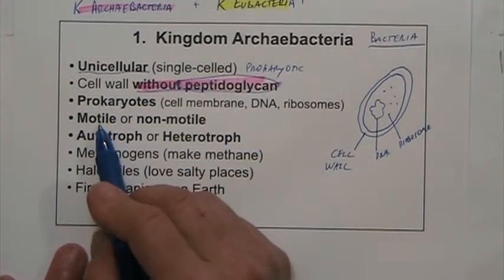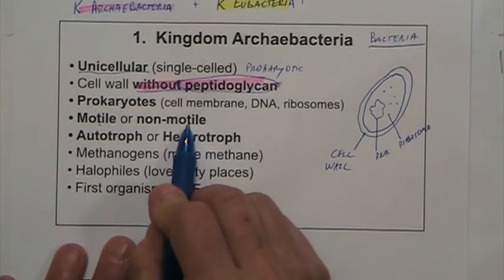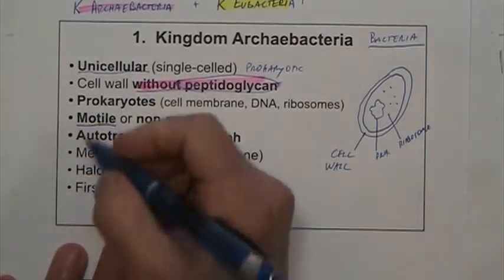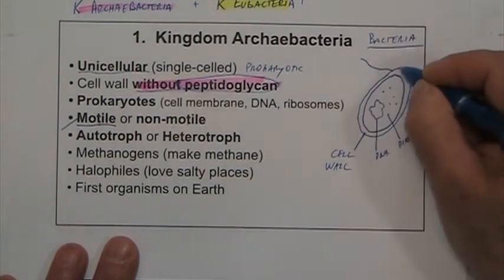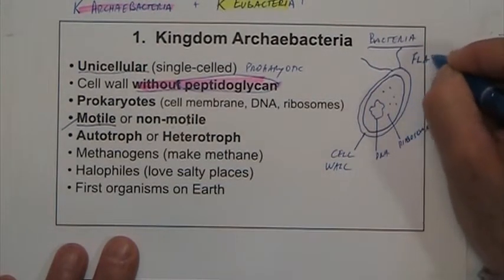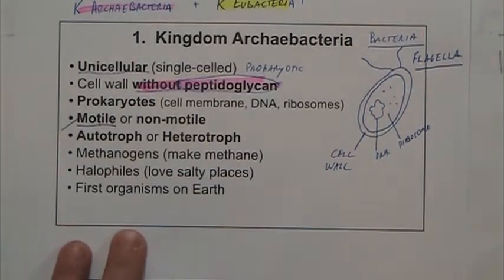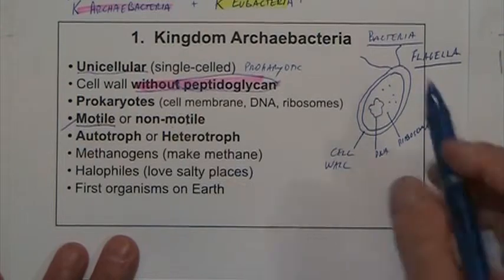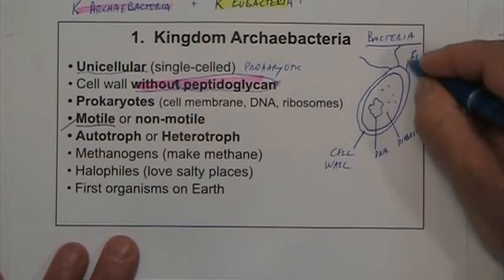This bacteria can be motile — meaning they can move — or non-motile, meaning they do not move. If they are motile, the bacteria are going to have flagella. If you review your types of cells from the beginning of the year, you'll remember flagella and cilia as structures.